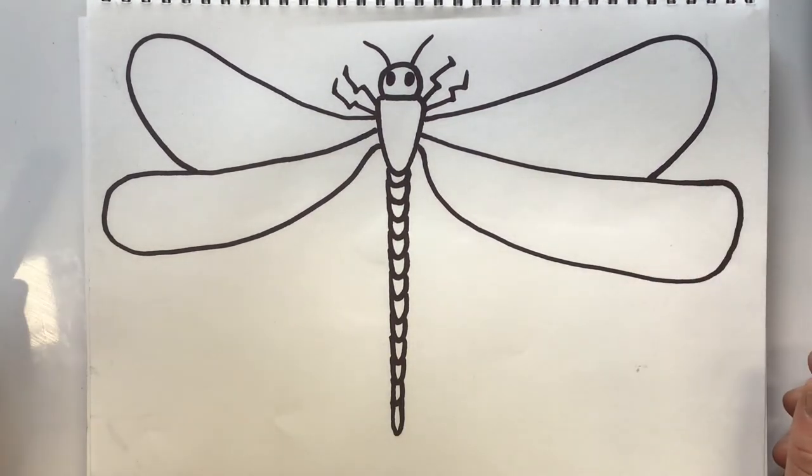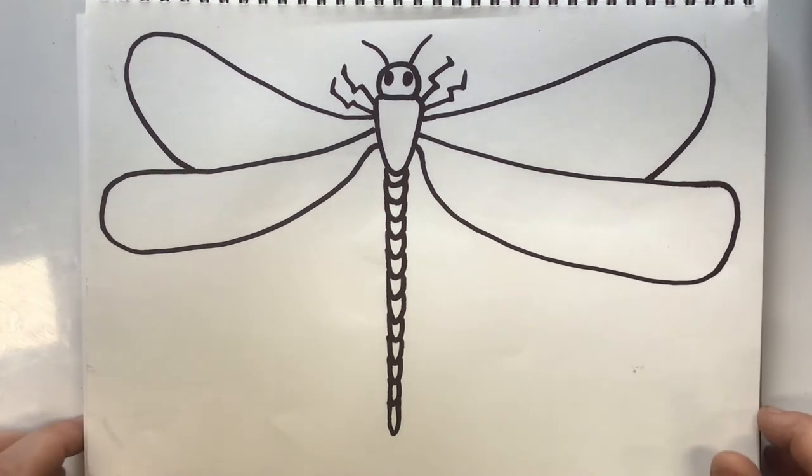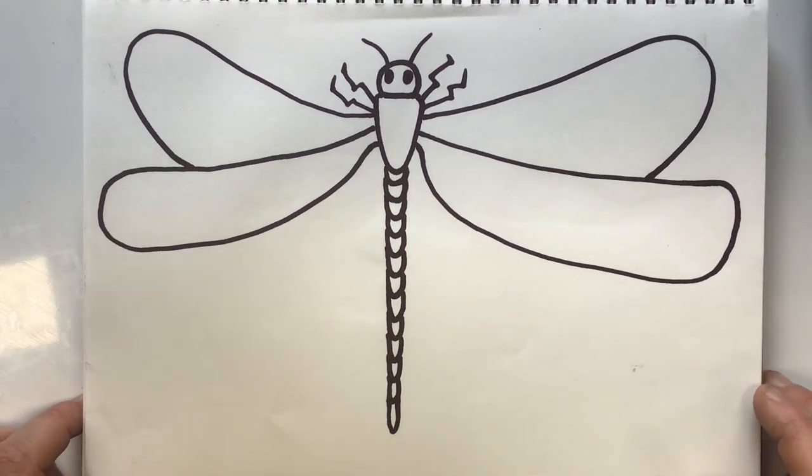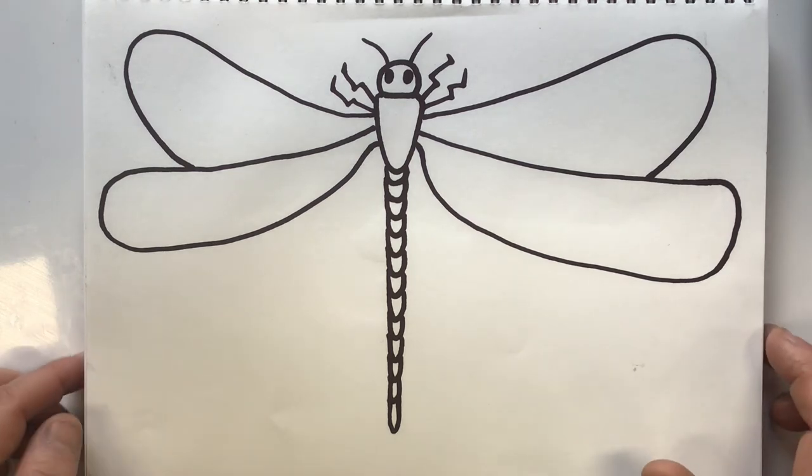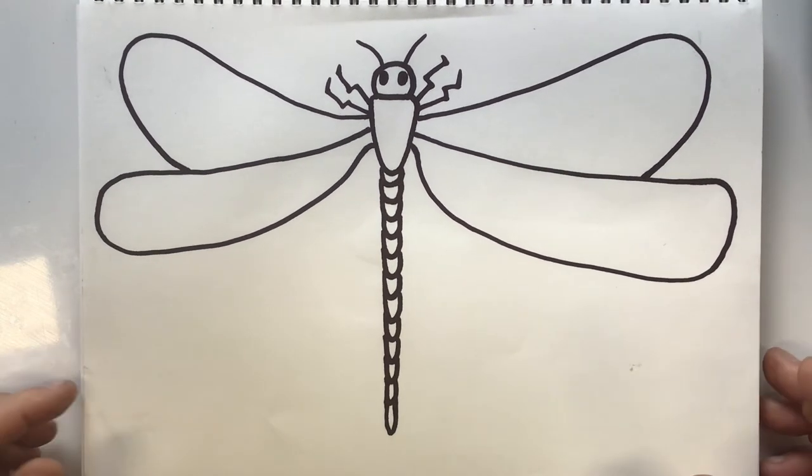Now all we need to do is color it in and you can color this however you like. You can make it look like a real dragonfly or you could make it like a colorful rainbow dragonfly. It's up to you. Have fun with it and make it look beautiful.